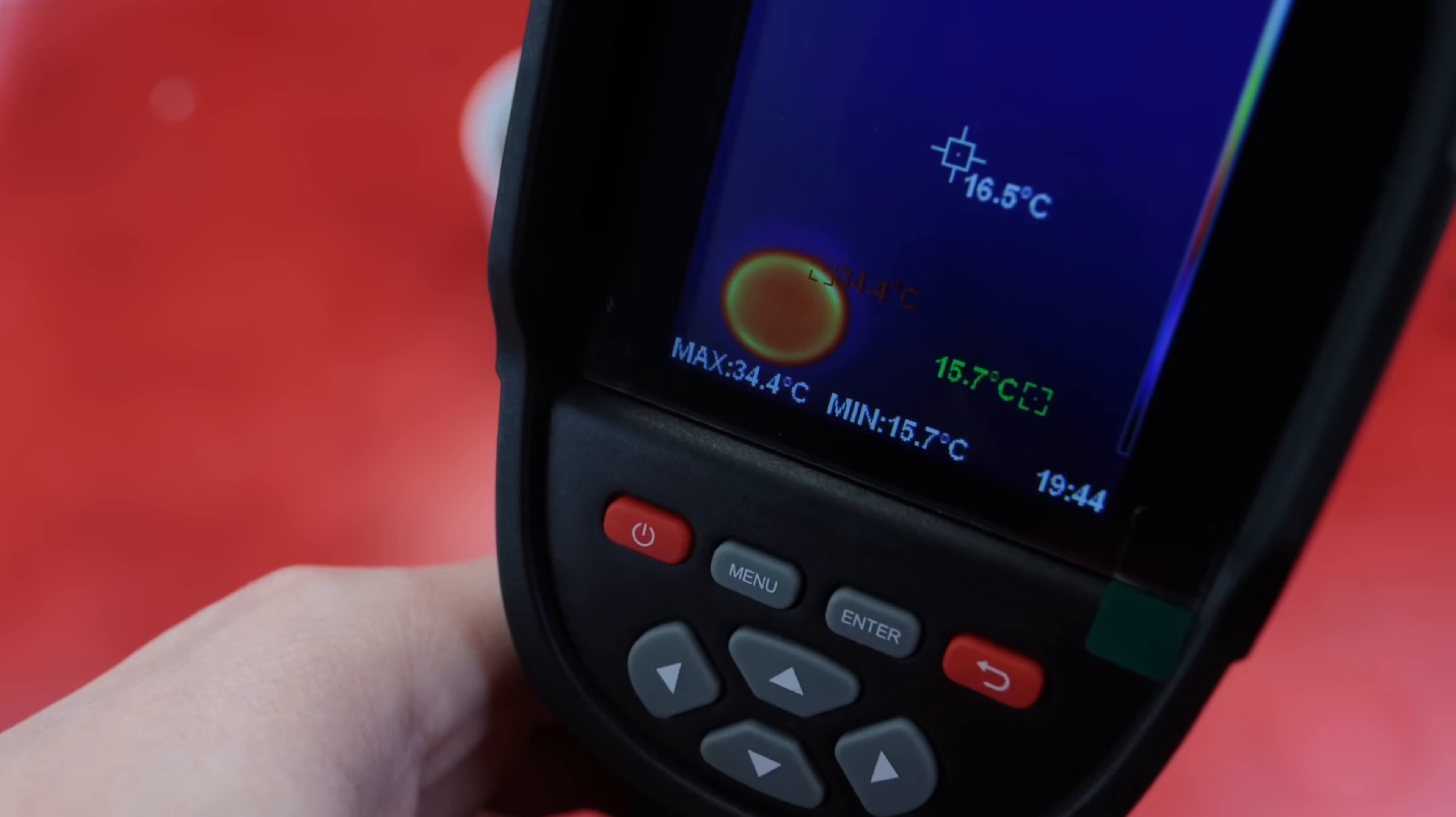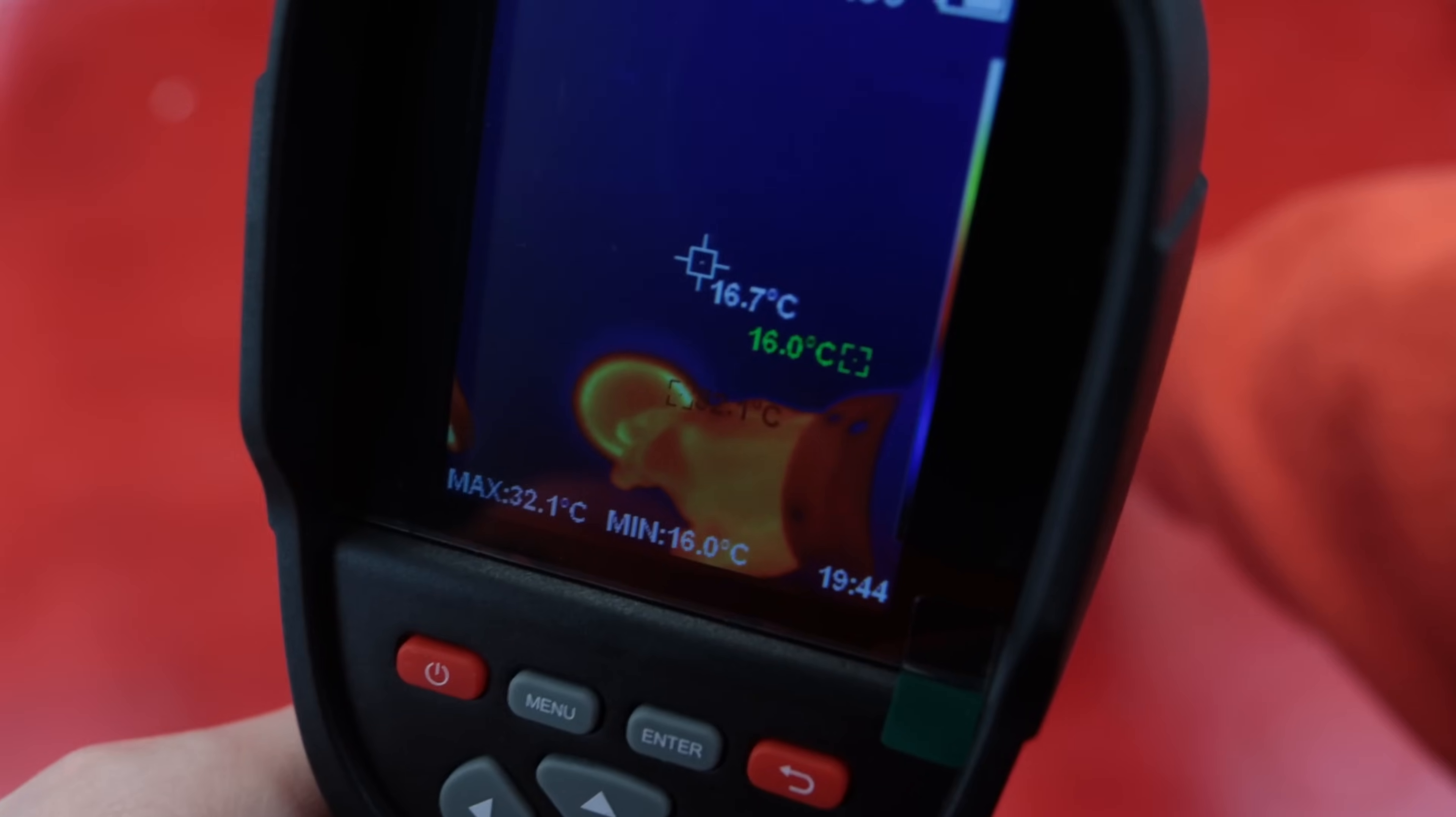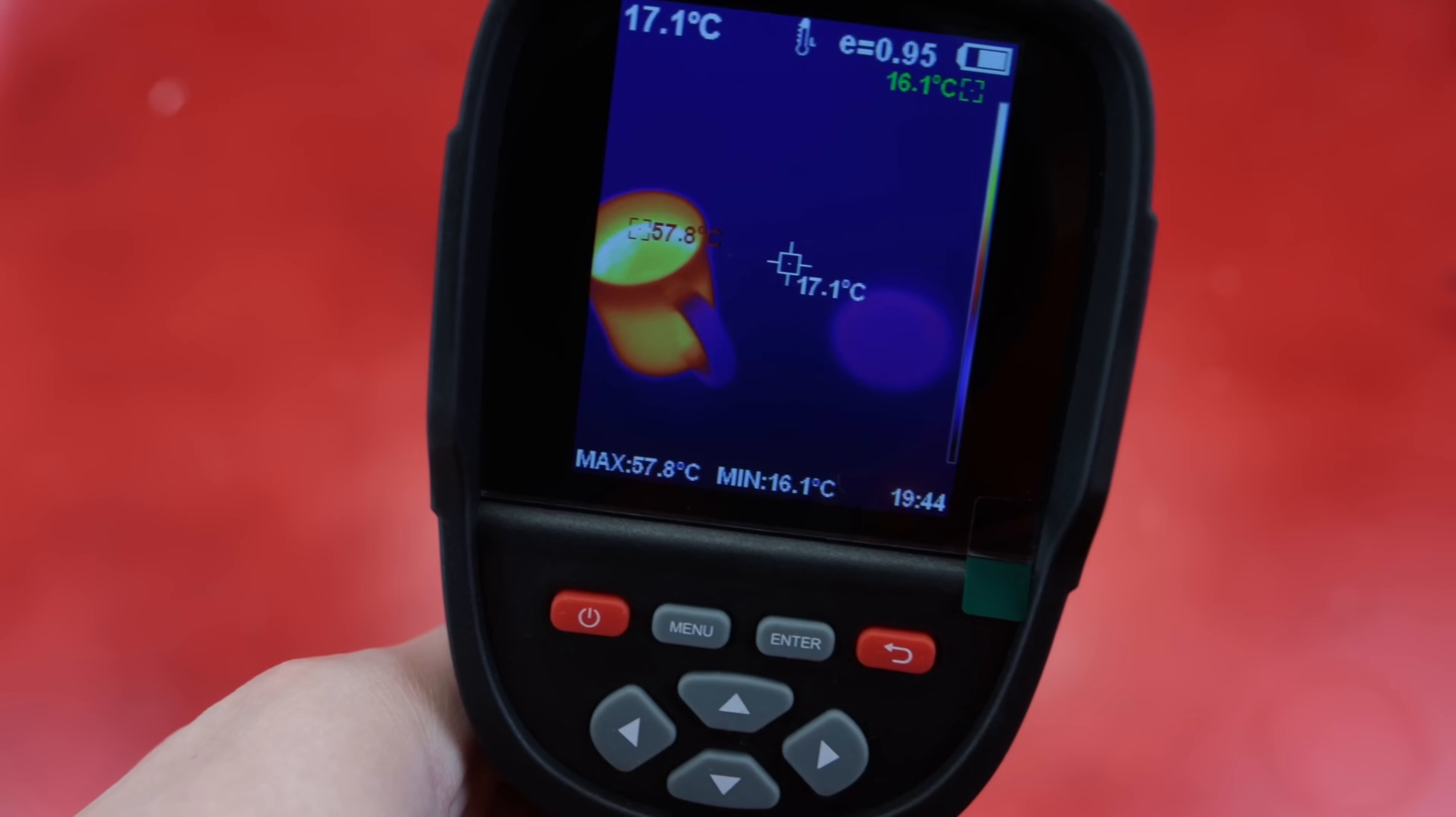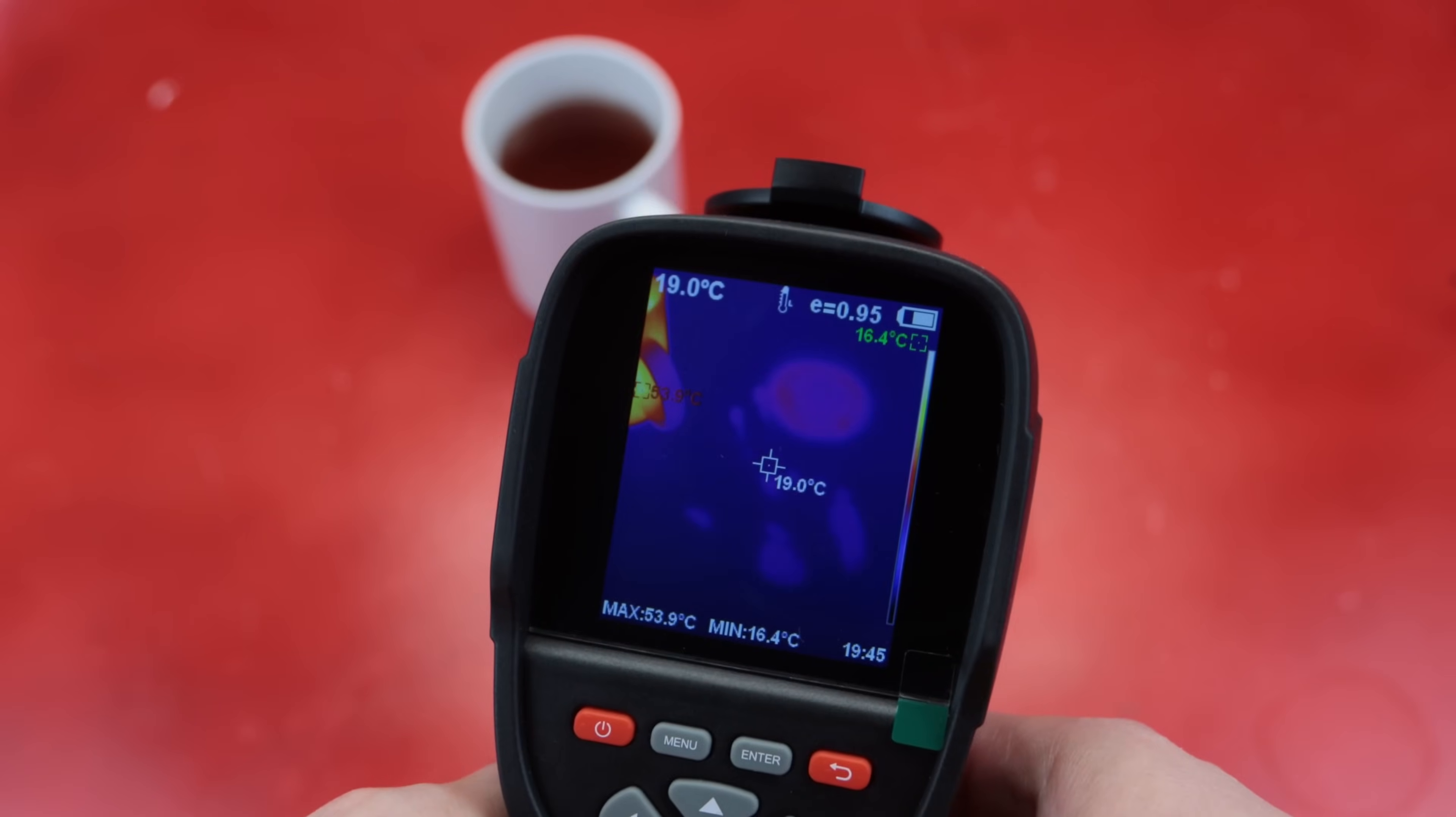Another cool thing about thermal cameras is they can show a thermal trail. For example, if I move the cup to a different spot it will leave a thermal trail as you can see here. This is especially useful for detecting moving parts. For example, if you're working on something like a train moving on rails, even if there's no obvious temperature difference, the friction will leave a thermal trail.